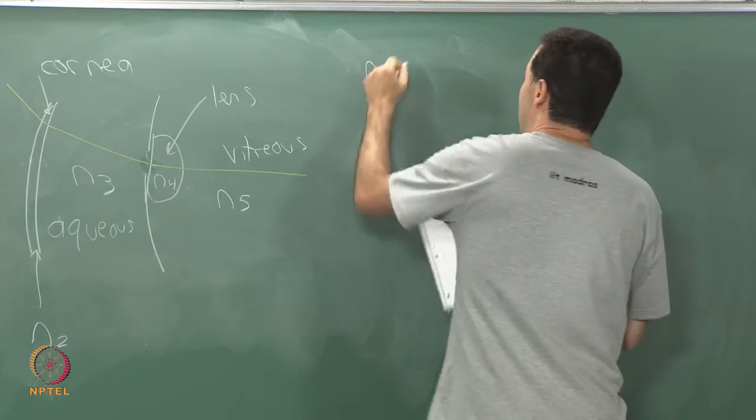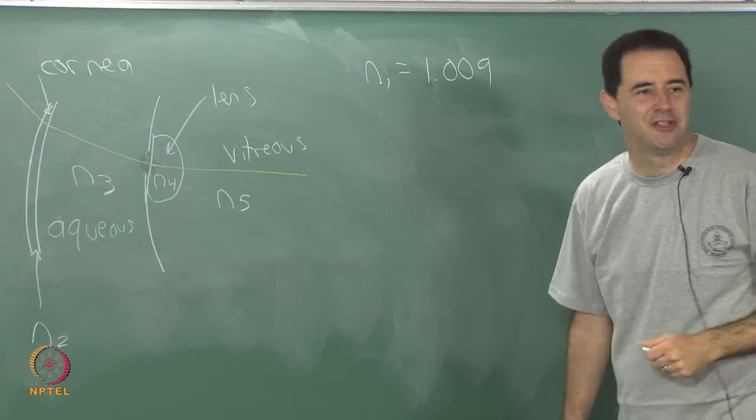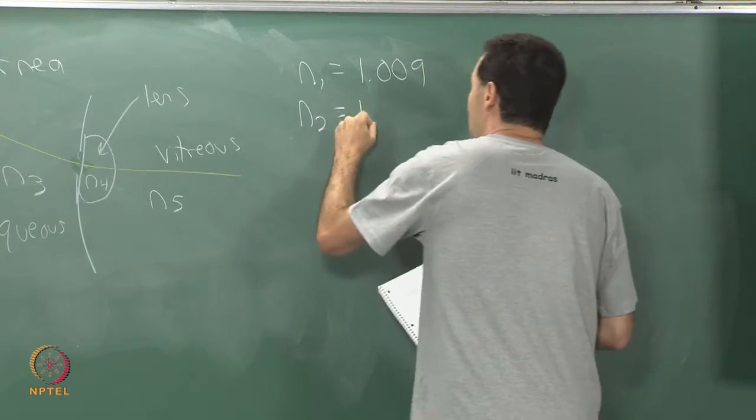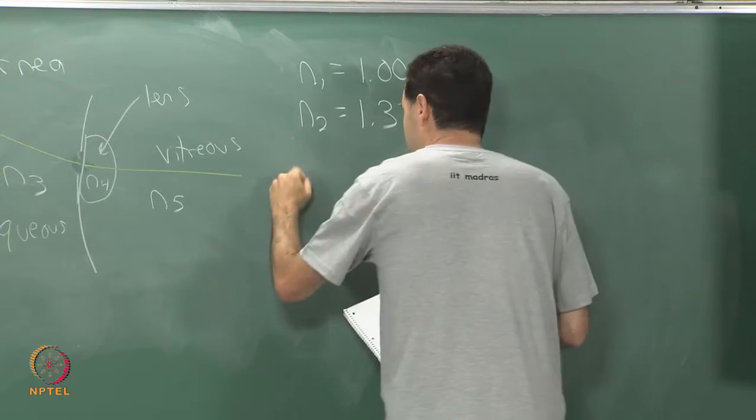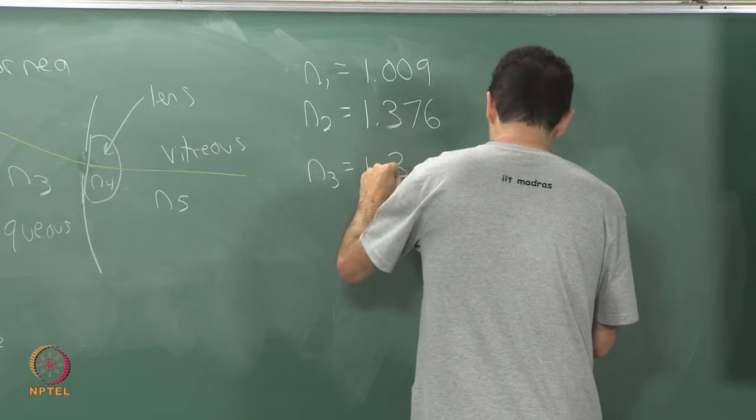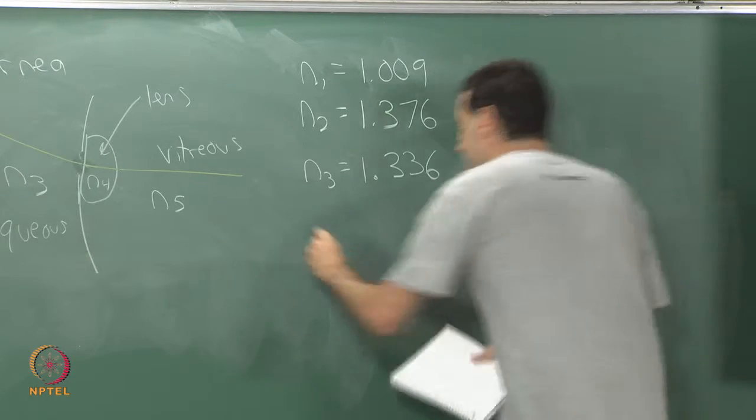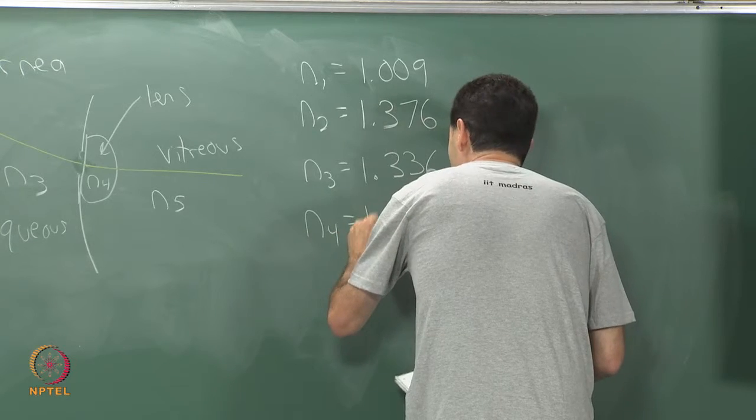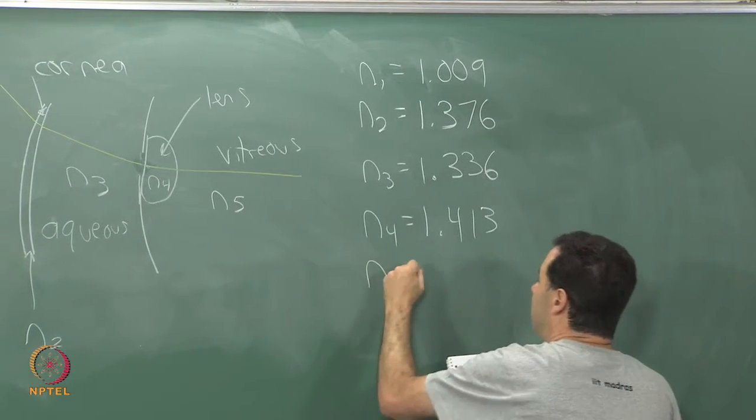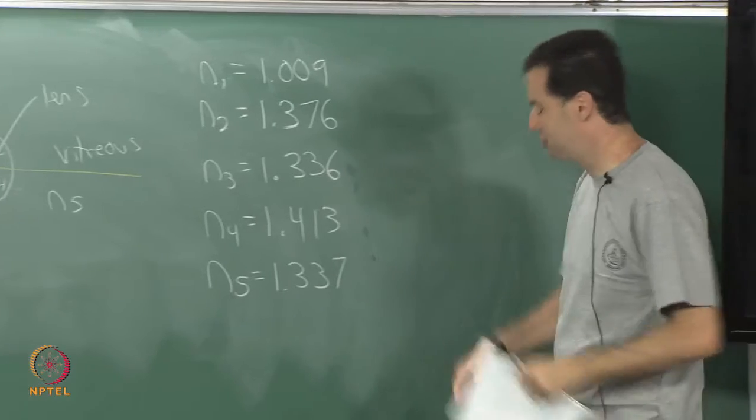Here are the refractive indices. Air is about 1, when I looked up these numbers it was 1.009. The cornea is 1.376 and the aqueous or ocular fluid is 1.336, so not too different. There is not too much of a change going from the cornea to the aqueous. The lens is 1.4, so a little more significant change there and then vitreous is similar to the aqueous. N5 is 1.337, essentially the same I think. So, air, cornea, aqueous, lens and vitreous.